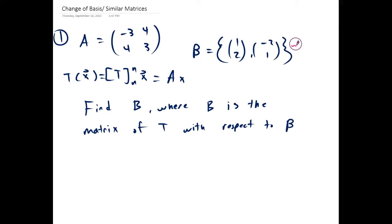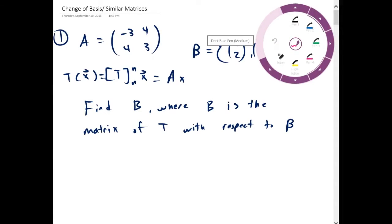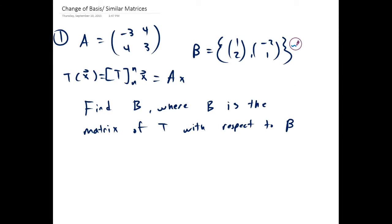This is the example video for change of basis and similar matrices. We have A equal to the matrix [-3, 4; 4, 3]. A is associated with the linear transformation T from the standard basis [1,0], [0,1] to the standard basis.